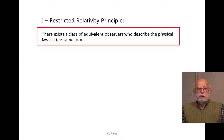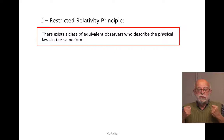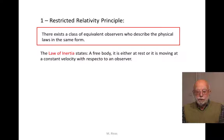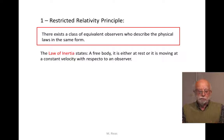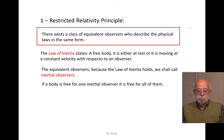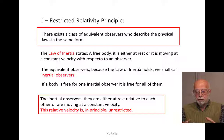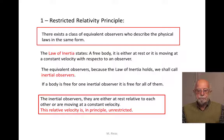The restricted relativity principle is stated in this form: we assume that there exists a class of equivalent observers for which they describe the physical laws in the same form. The dynamical laws are written in the same form in every reference frame. One of the laws satisfied for every equivalent observer is the law of inertia, which means that for some particular observer a body is free if it is at rest or moving at constant velocity. If the law of inertia is satisfied for the whole class of equivalent observers, we call them inertial observers.